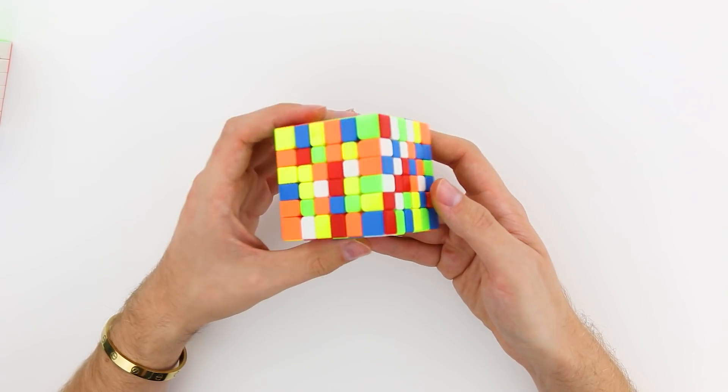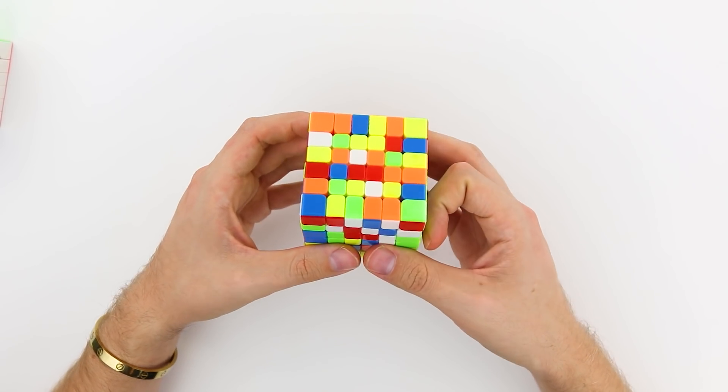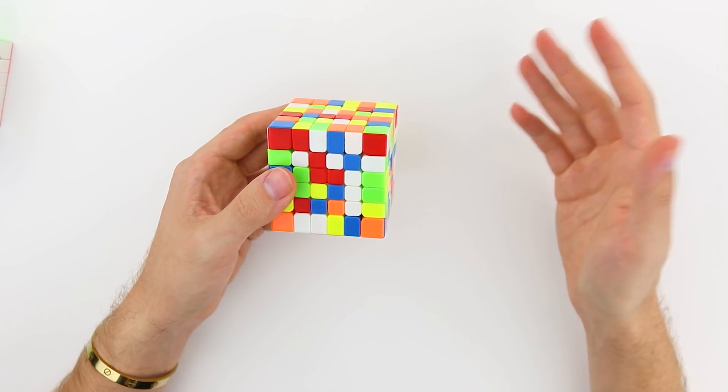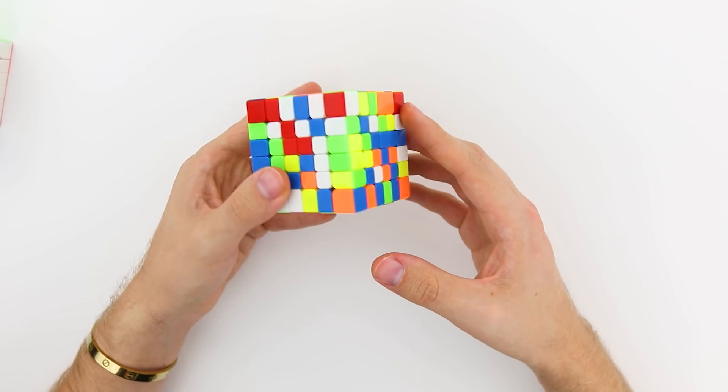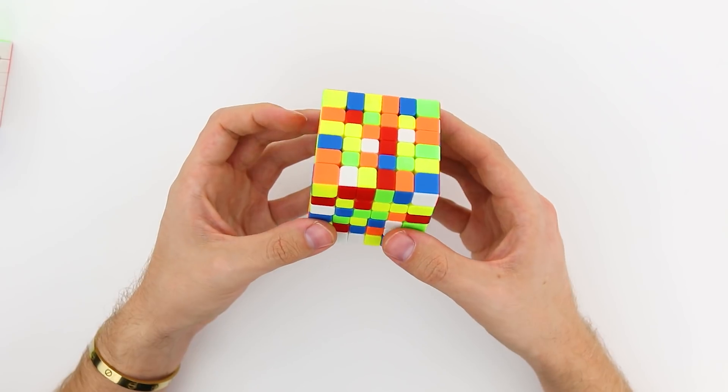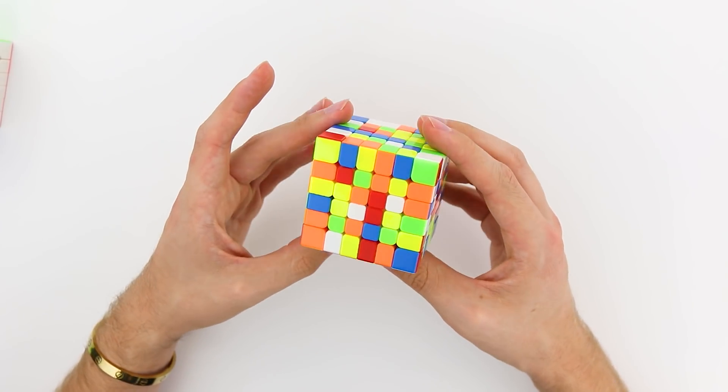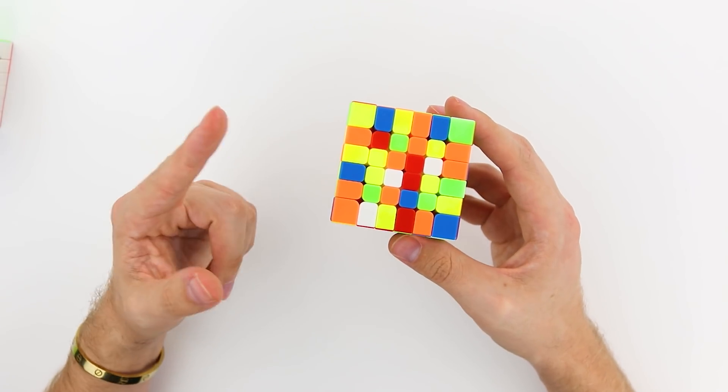I'm really curious what the size difference is going to do for cubers that have smaller hands, if it's going to be that big of a deal for you or not. But, yeah, I'm really curious to see when this final version comes out, because this is like a final stage prototype. I guess kind of what more people will think about this cube. But, ultimately, I think that Qiyi is continuing to go in the right direction, and this will be a really enjoyable 6x6 for a lot of people.